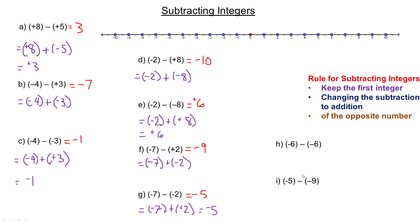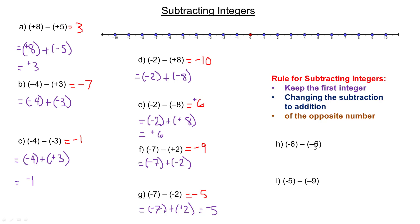For example H, we're subtracting negative 6 from negative 6. Keep the negative 6, then change subtract negative 6 to adding positive 6. Adding integers with opposite signs, subtract 6 and 6 to get 0 — no positive or negative, just 0. This is an example of adding opposites, which always gives 0. Just like 100 minus 100 is 0, negative 6 take away negative 6 is also 0.